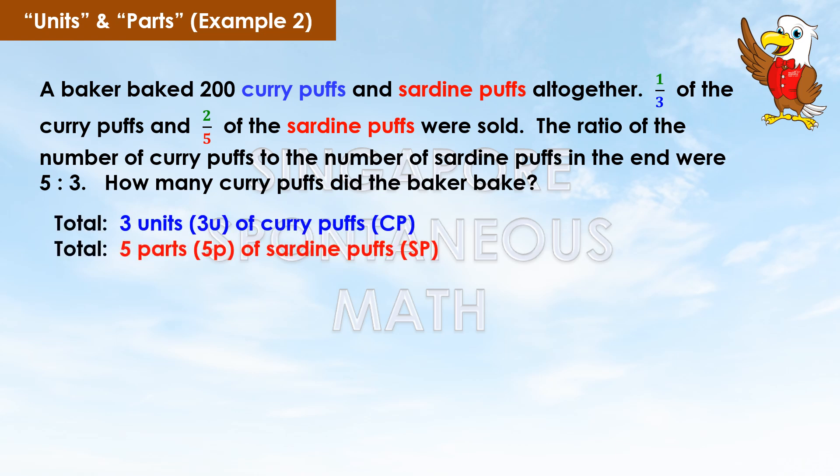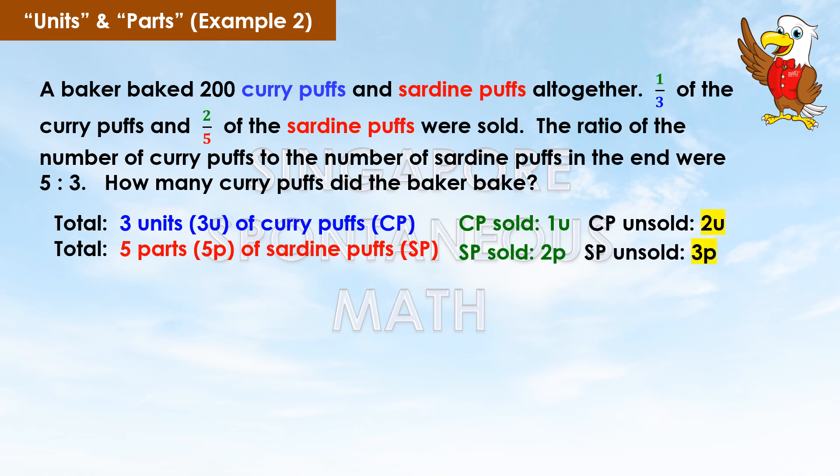We use units to represent the curry puffs and parts to represent the sardine puffs. There are three units of curry puffs in total and five parts of sardine puffs in total. Of the three units of curry puffs, one unit was sold. Hence, the number of curry puffs unsold is 2 units. Of the five parts of sardine puffs, two parts were sold. Hence, the number of sardine puffs unsold is 3 parts. Five minus two equals three.